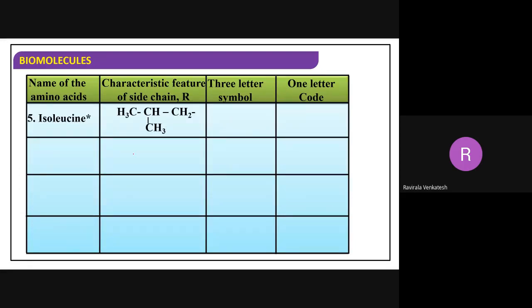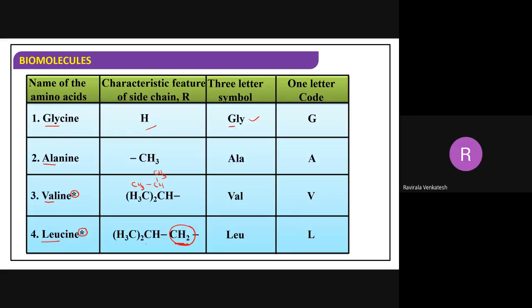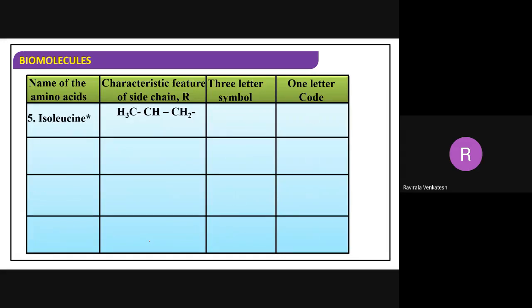Next is isoleucine. In leucine, the second carbon is having a methyl group - this is the difference. Isoleucine's symbol is ILE and its one-letter code is I. Then arginine - take ARG as the symbol. Next, lysine - take LYS, and the code is K.